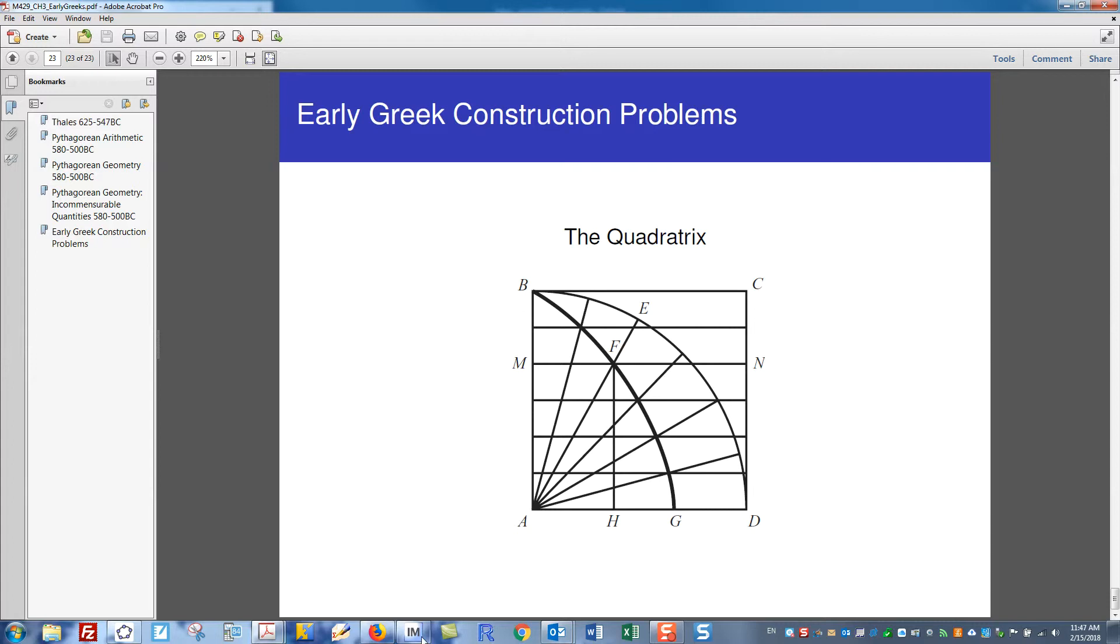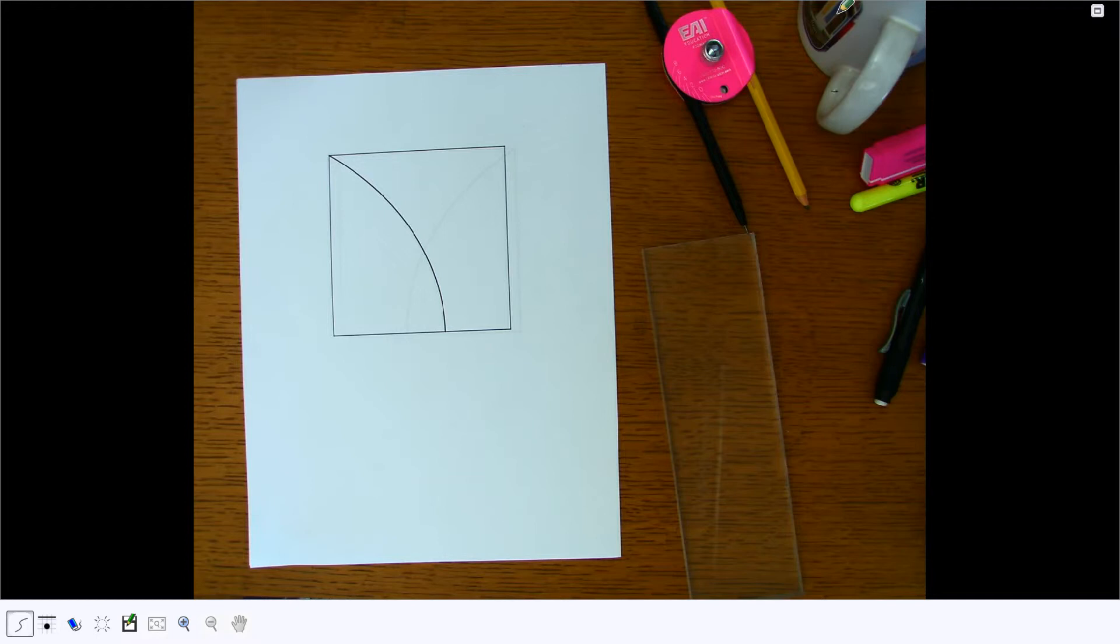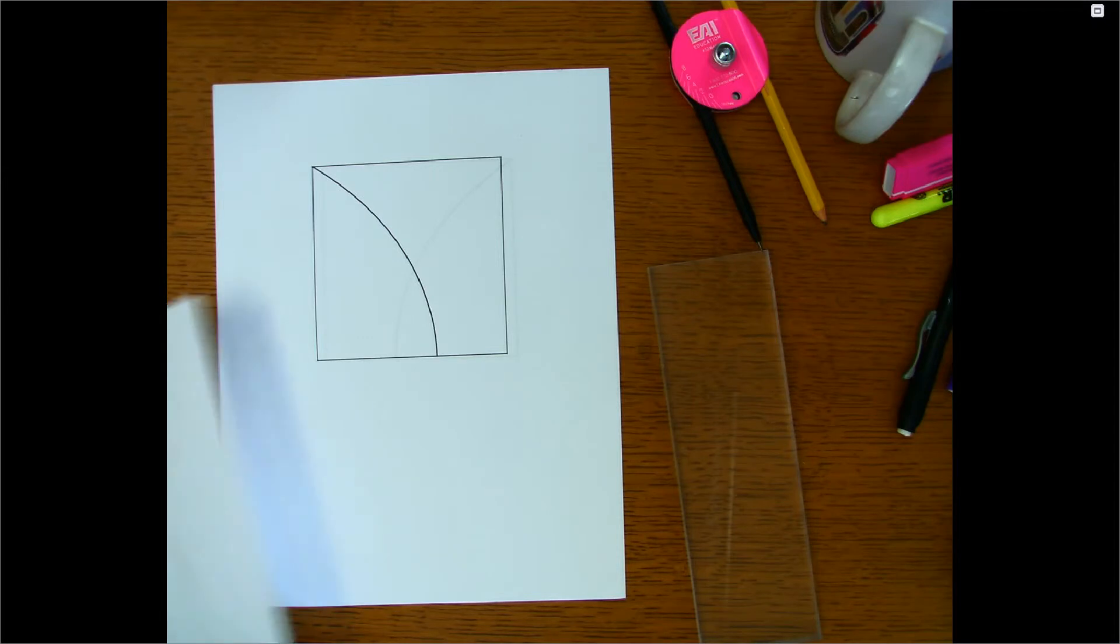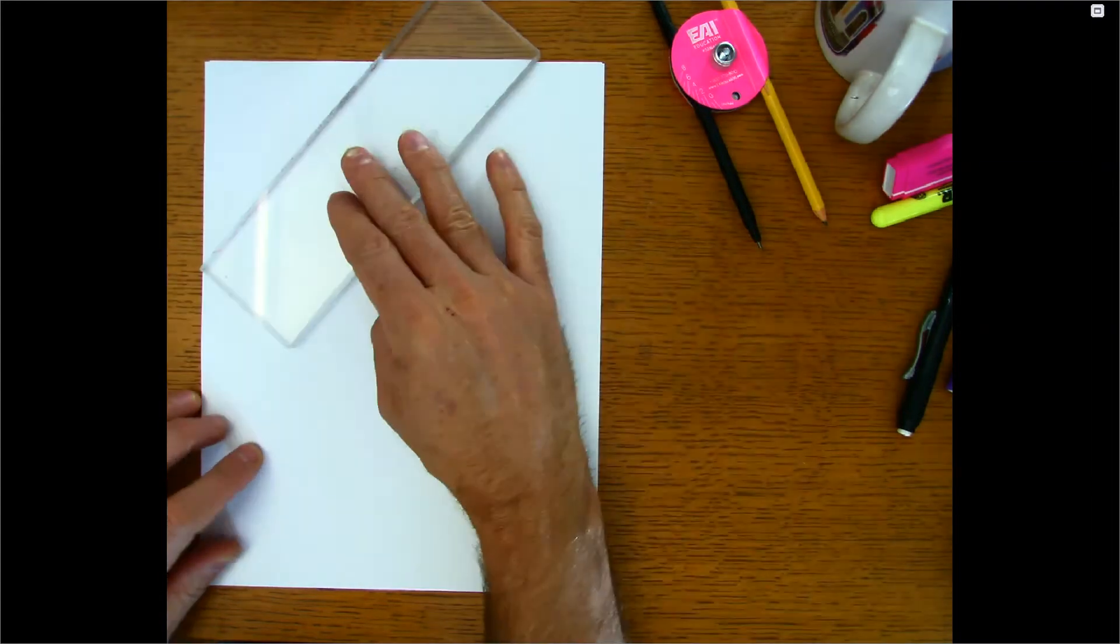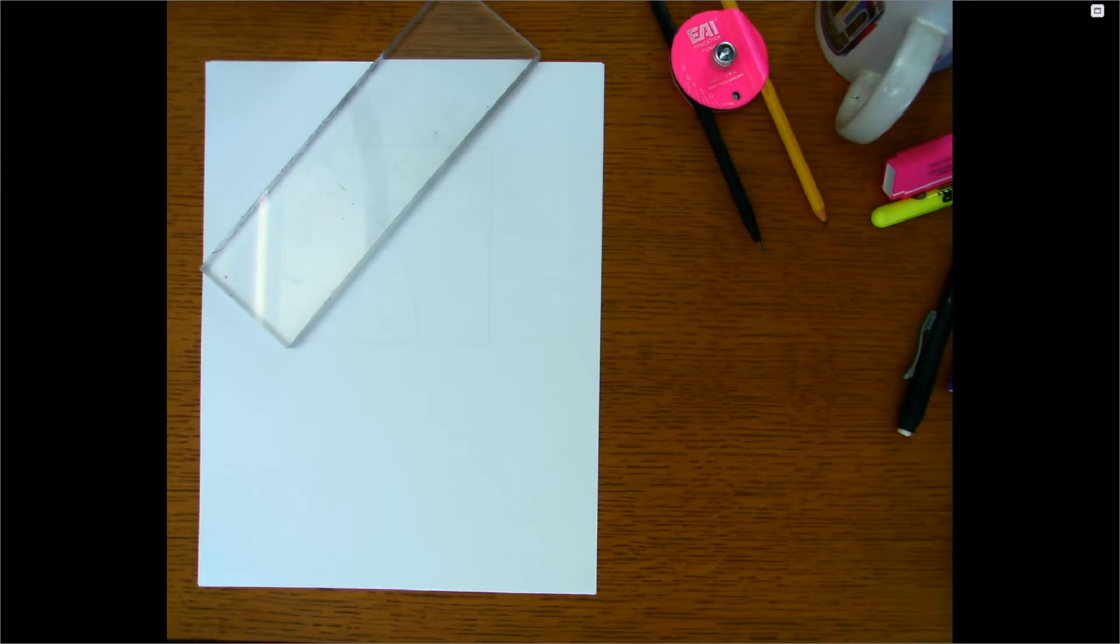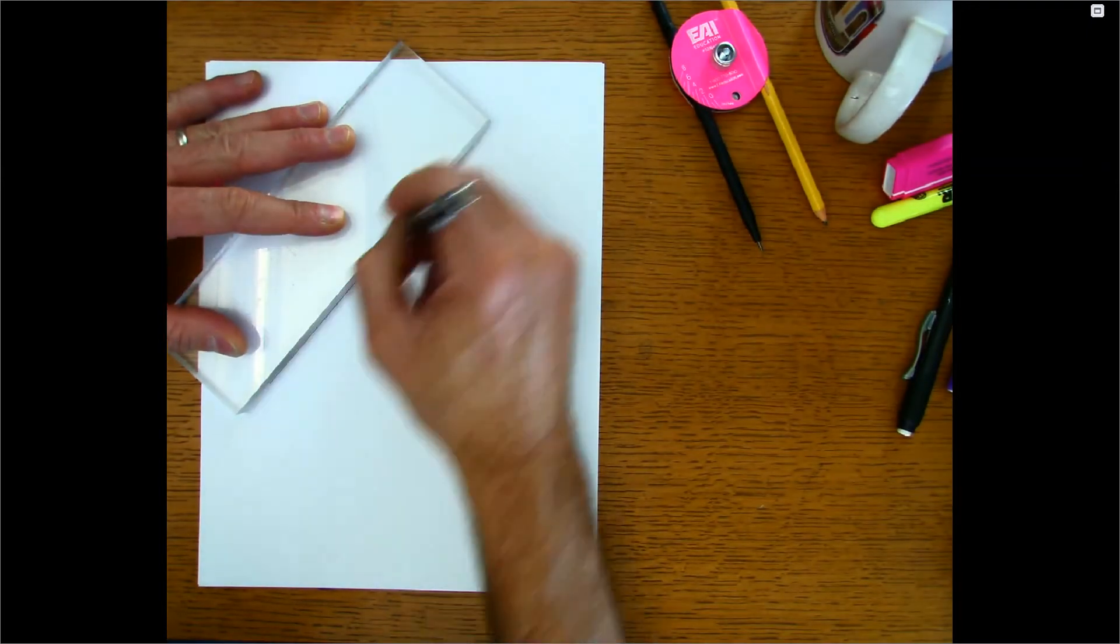Okay, so let's see how the quadratrix was used to trisect an angle. I'll go ahead and go to my overhead here. And here's a picture of the quadratrix. I handed this out in class. But before you understand the quadratrix, you really have to understand how you can trisect a segment.